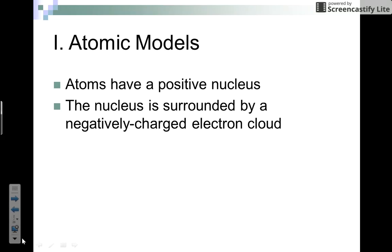When you think of an atom, we know that atoms have a positive nucleus because your protons and neutrons are in your nucleus. Since neutrons have no charge and protons are positive, the nucleus is positive. The nucleus is surrounded by a negatively-charged electron cloud. In an atom, the number of protons and electrons are equal, so we have a neutral atom.